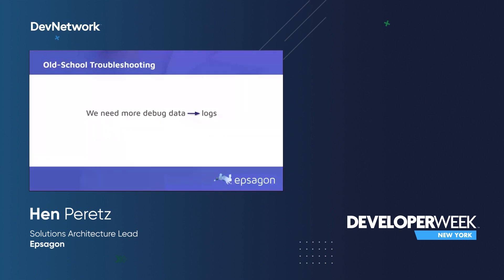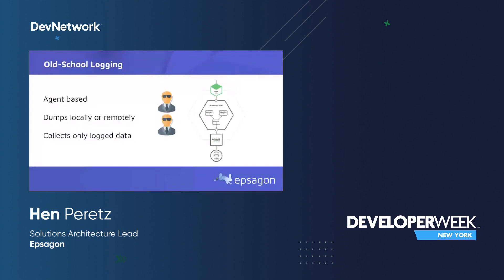When it comes to logging, old school logging is basically done by an agent placed in my service that dumps the logs locally or sends them to a log aggregator. The main problem with those old school logging methods is that logging is basically whatever I printed out to the screen. So I'm constrained by what I actually printed. There are a lot of things my service is doing that are not being logged, and that information will be missing from the log data.